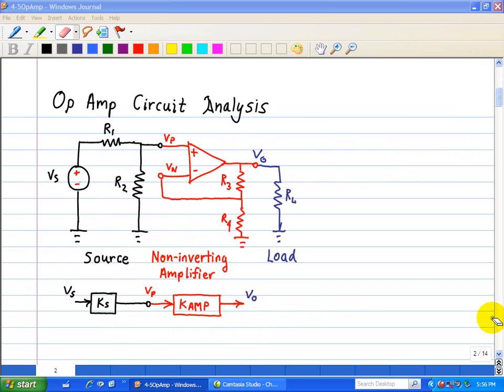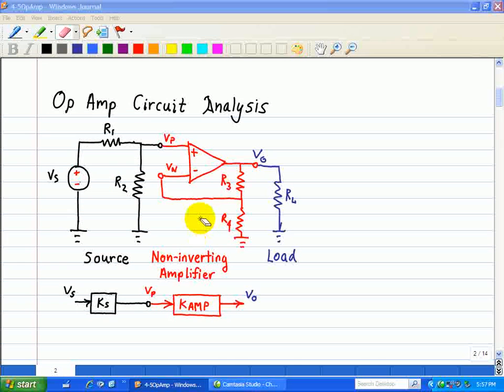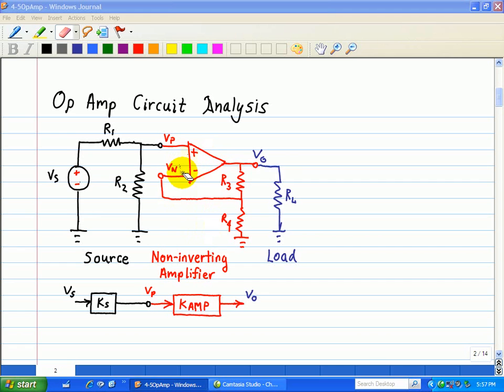Okay, let's analyze this op amp. Here we partition the circuit as a source. Recognize that this feedback configuration with this op amp is a non-inverting amplifier and the load. We're asked to find the relationship between the output voltage that's across this load and the input voltage Vs concerning this voltage source.